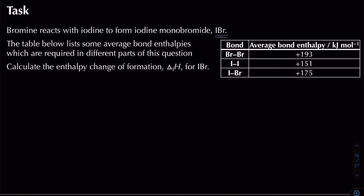In this next example, bromine reacts with iodine to form iodine monobromide (IBr). A table of average bond enthalpies is provided. We need to calculate the enthalpy change of formation, ΔHf, for IBr. First, we write the equation for enthalpy of formation: 0.5 I₂ + 0.5 Br₂ → IBr, using half-mole quantities of each diatomic.